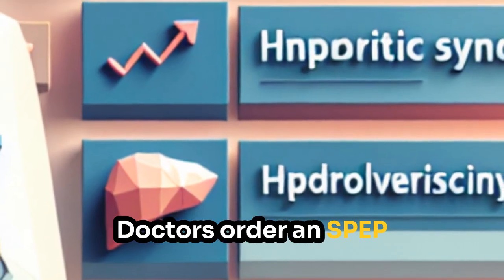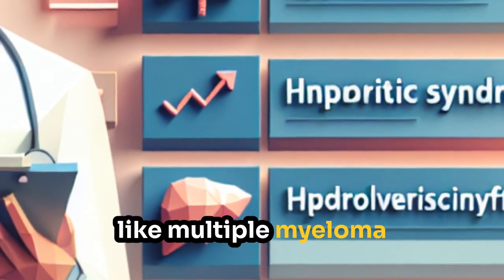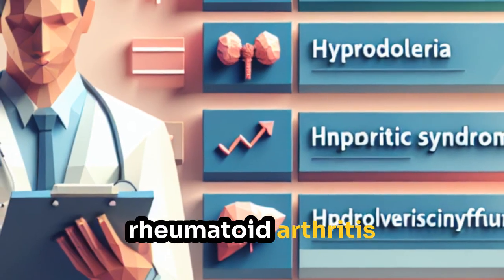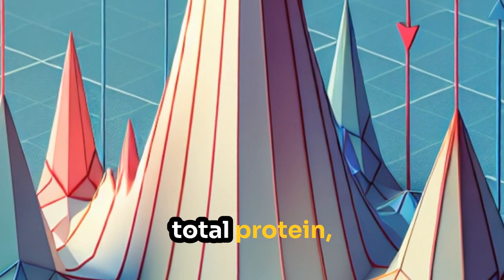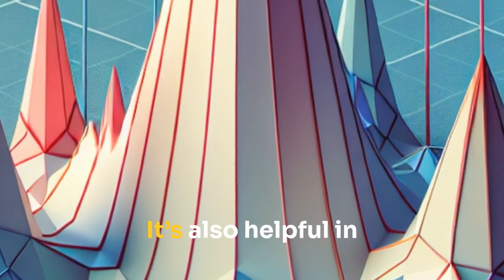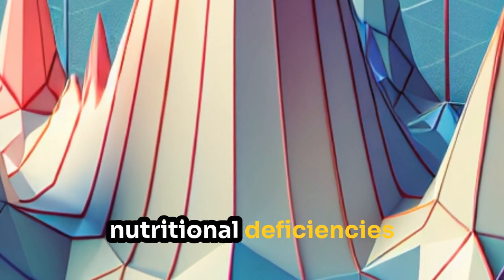Doctors order an SPEP when they suspect a monoclonal gammopathy like multiple myeloma, autoimmune diseases like lupus or rheumatoid arthritis, chronic infections, or to investigate unexplained high total protein, hypogammaglobulinemia, or nephrotic syndrome. It's also helpful in evaluating liver dysfunction and certain nutritional deficiencies.